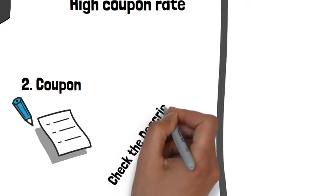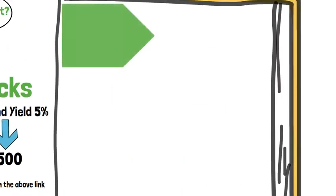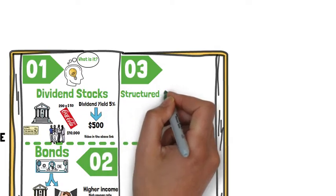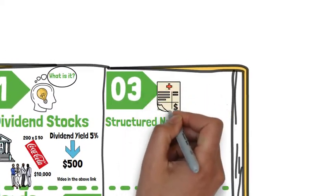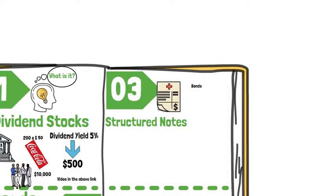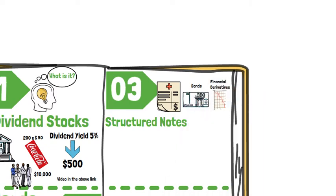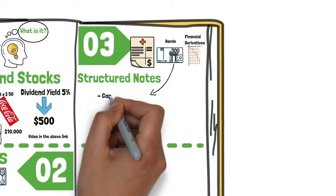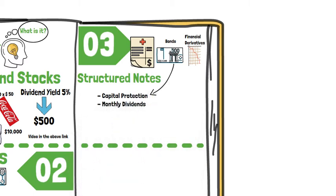Option number three: structured notes. Structured notes are complex products that usually combine bonds and derivatives. Structured notes pay you monthly interest in the form of coupons. The bond component provides you with the capital protection and monthly dividends, while derivatives provide the note upside potential for investors.